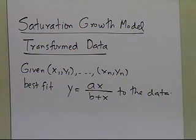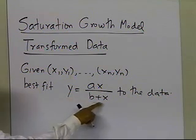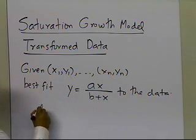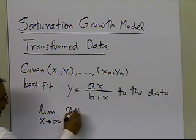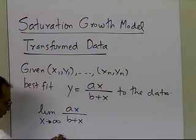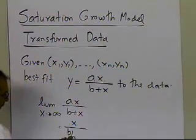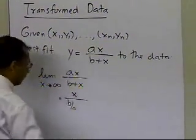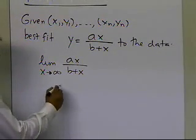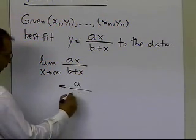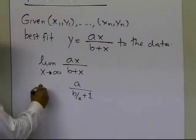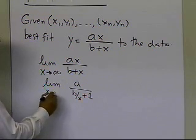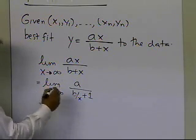Now, this best fit for this saturation growth model, the reason why this is called saturation is because if you take the limit as x approaches infinity, this is ax divided by b plus x, will be equal to... if I divide by x both the numerator and denominator, I get a divided by b by x plus 1, limit of x approaching infinity, and I get just a.